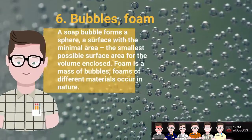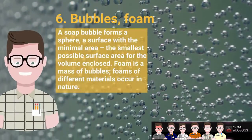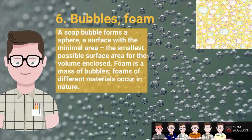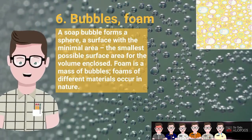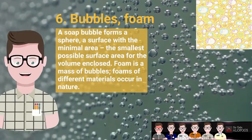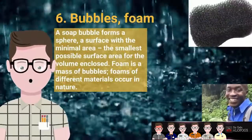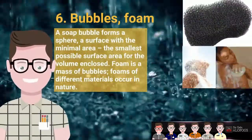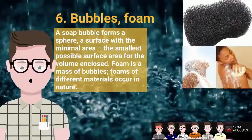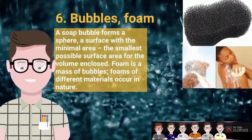Bubbles and foam: a bubble surface has a minimal area — the smallest possible surface area for the volume enclosed. Foam is a mass of bubbles, and foams of different materials occur in nature.